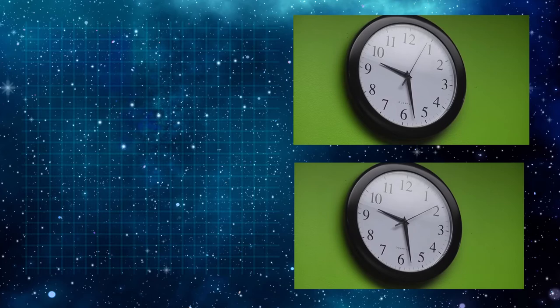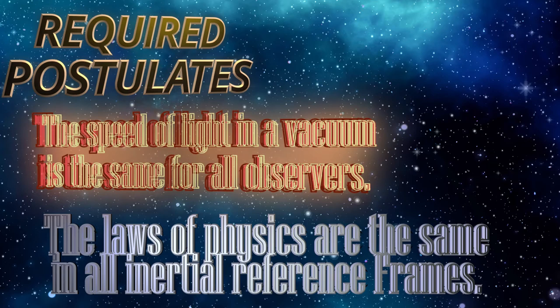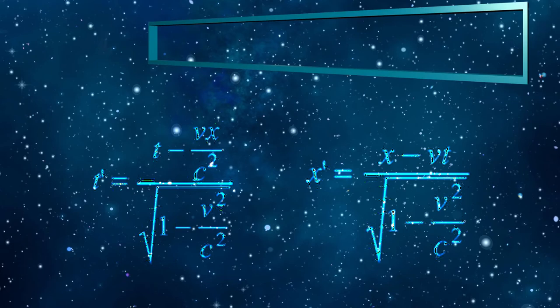The special theory of relativity starts from two postulates. The laws of physics are the same in all inertial reference frames, and the speed of light in a vacuum is the same for all observers. Starting from here, time and space change when converted between different reference frames, using the Lorentz transformations.